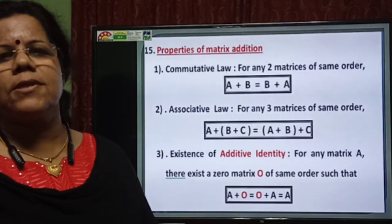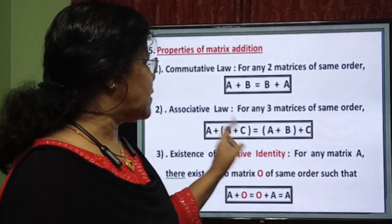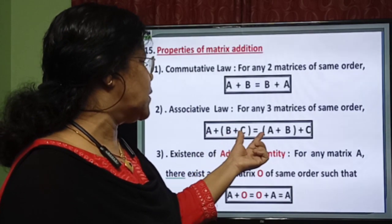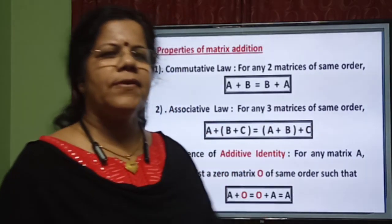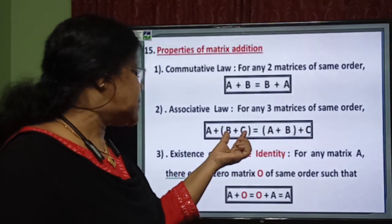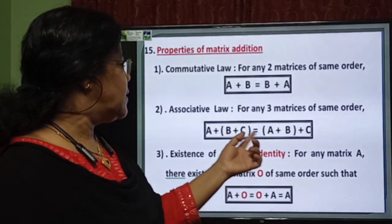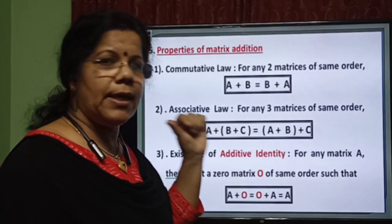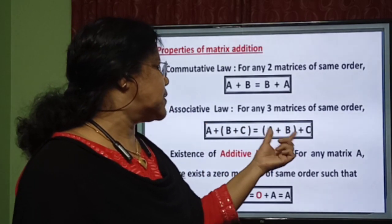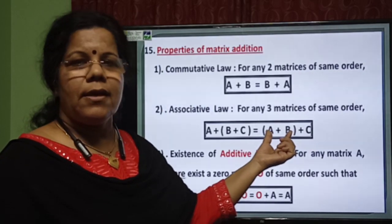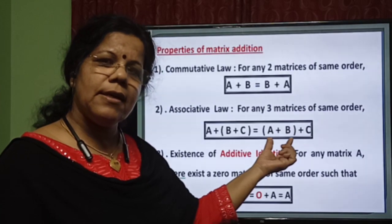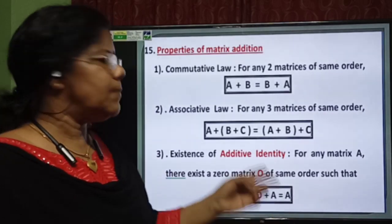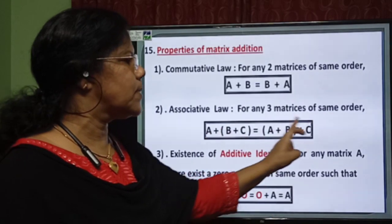The next property is the associative property. If A, B, C are three matrices of the same order, then A plus (B plus C) equals (A plus B) plus C. Here, B plus C is calculated first, then A is added to it. In the other case, A plus B is calculated first, then C is added. Through example, you can observe that A plus (B plus C) equals (A plus B) plus C.